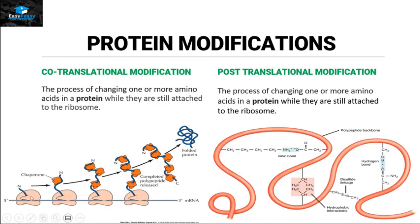As you can see in this picture, this protein is still attached to the ribosome, and the ribosome is still moving along the mRNA, but chaperones start attaching themselves to this protein and start folding it into the tertiary and quaternary state. Folding is considered a category of modification, so this type is called co-translational modification.